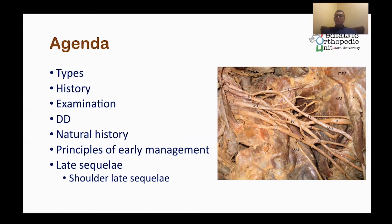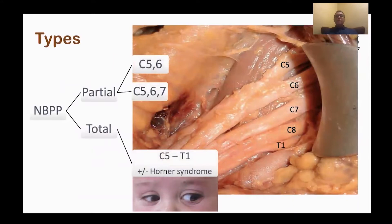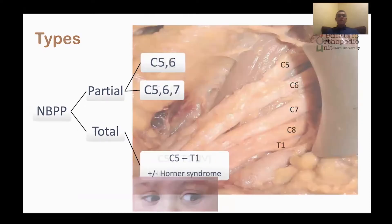Because of the restriction of time, I will discuss only shorter late sequelae. Neonatal Brachial Plexus Palsy is classified into partial or total. Partial means injury of C5-6 only, extended partial is C5-6-7, and total involvement of all roots from C5 to T1. A characteristic type of total Brachial Plexus Palsy is the association with positive Horner syndrome.